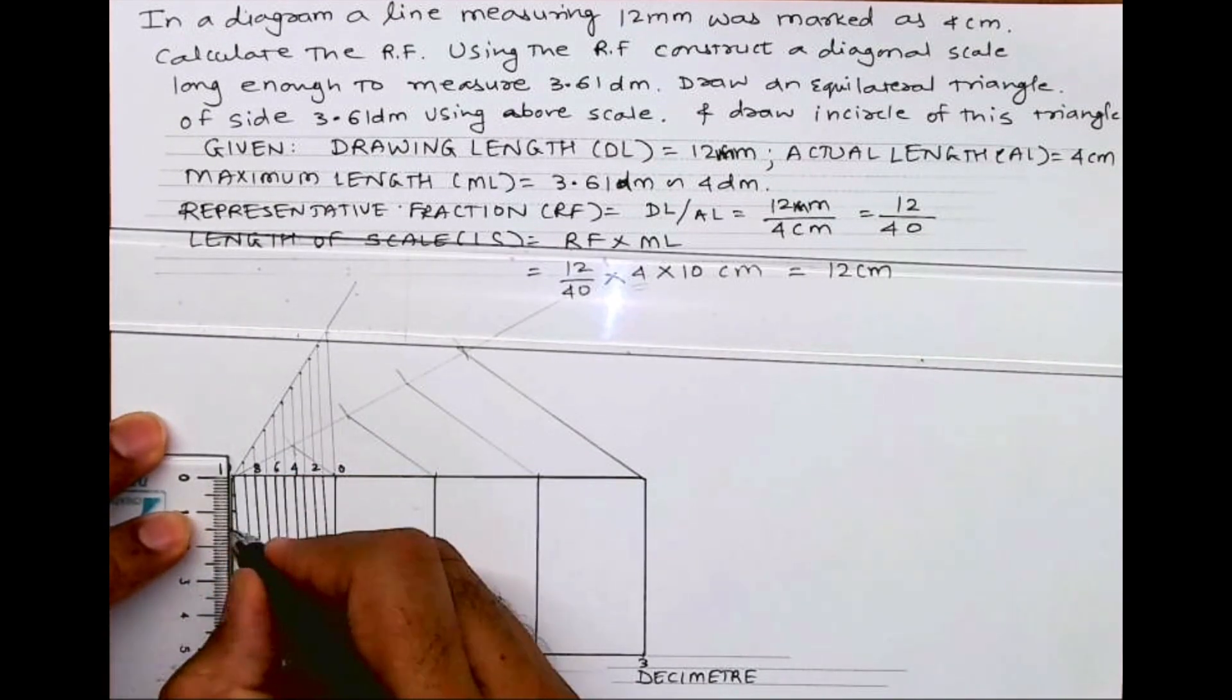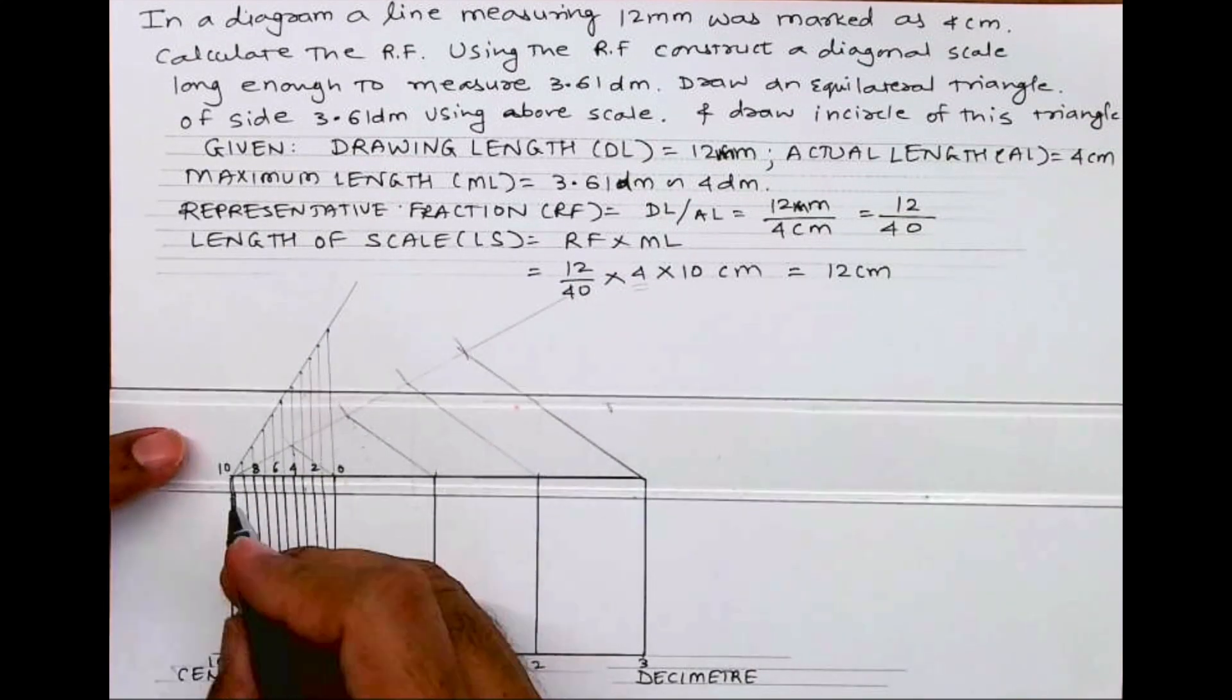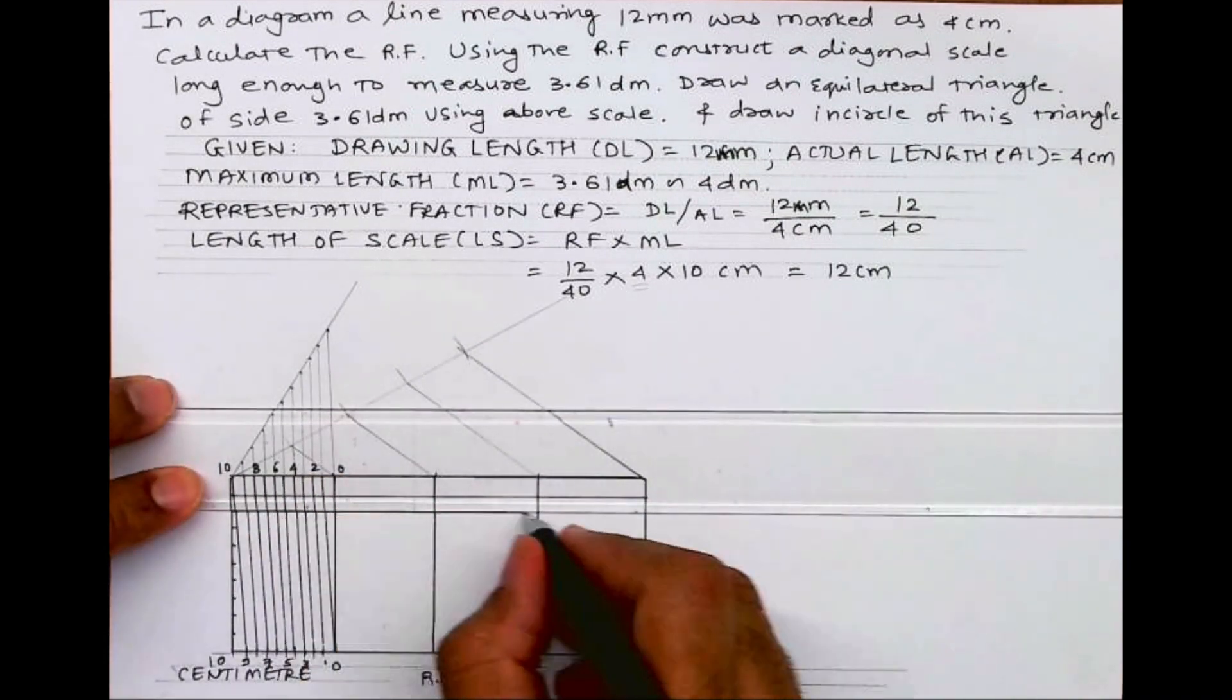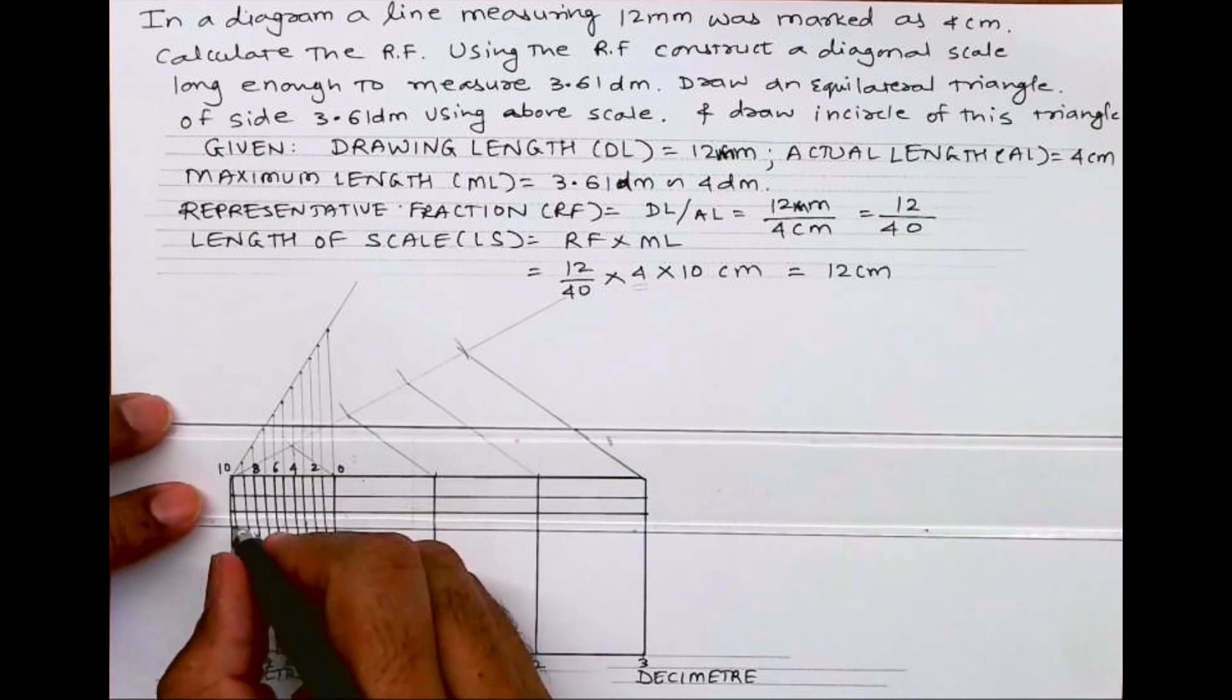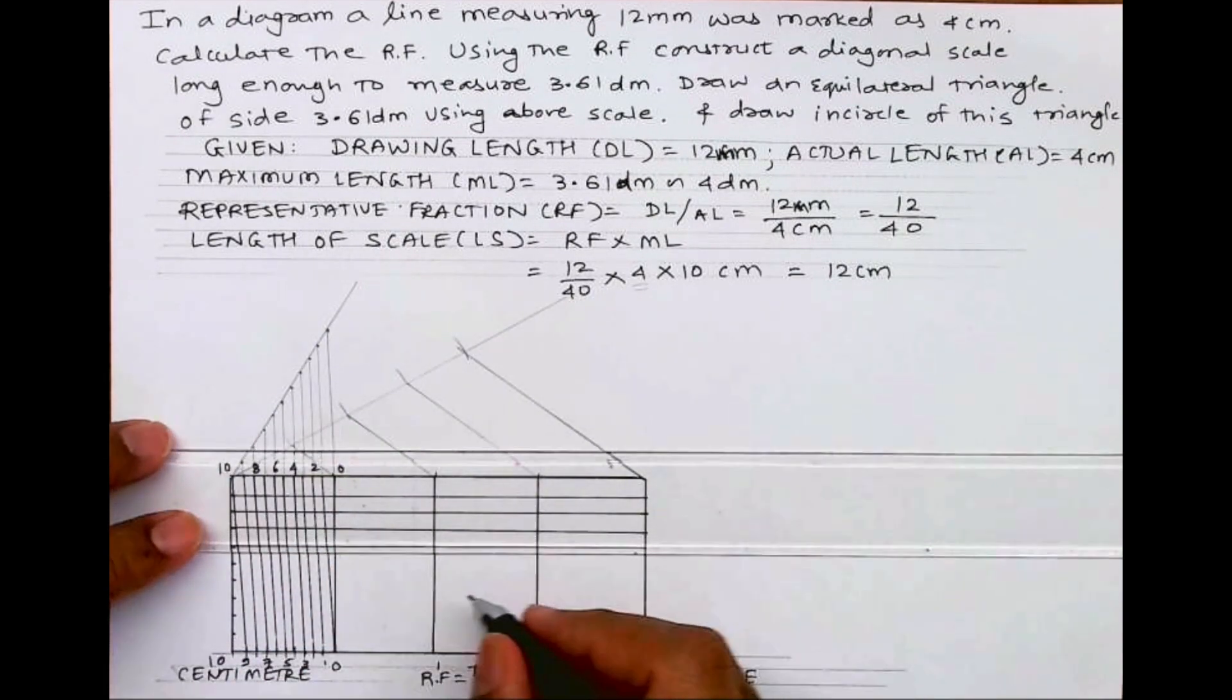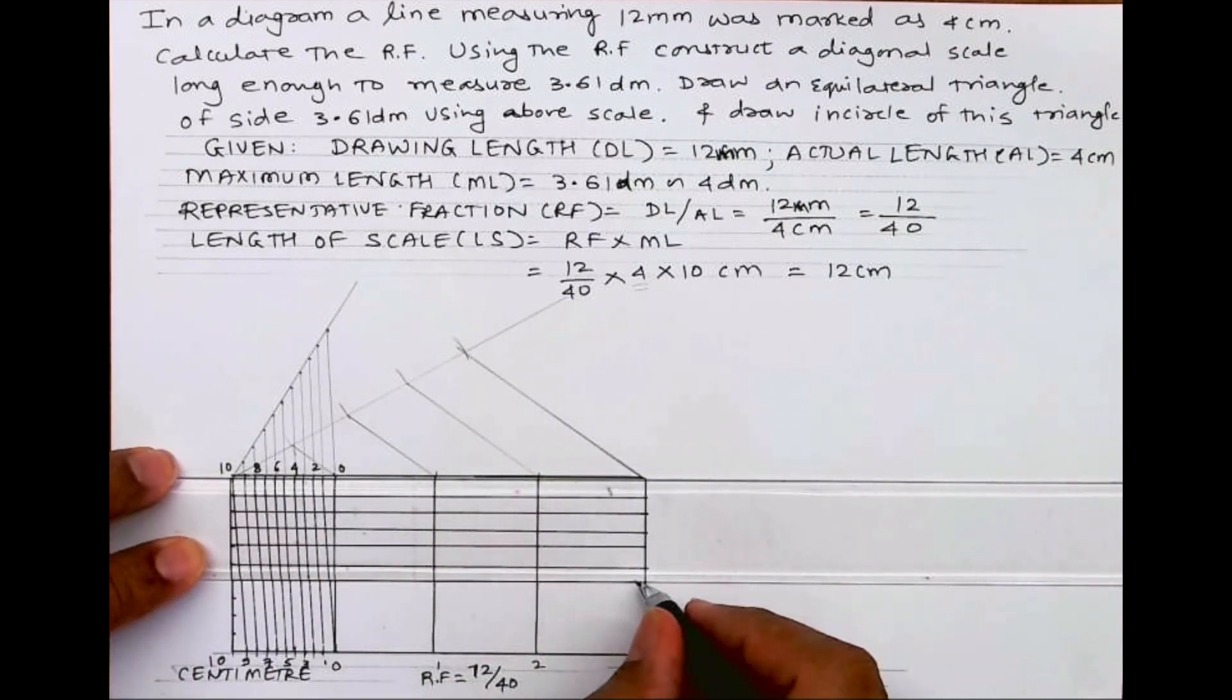Now we'll divide the vertical line into 10 parts. Since we have taken 5 cm, I can take 5 mm divisions. We'll draw horizontal lines. By doing this, we are done with diagonal scale. Then we need to write millimeter.